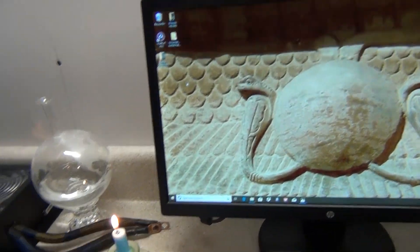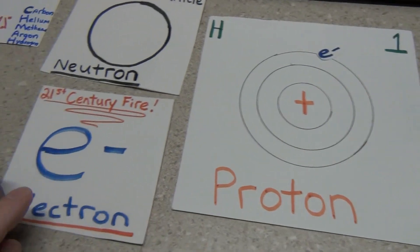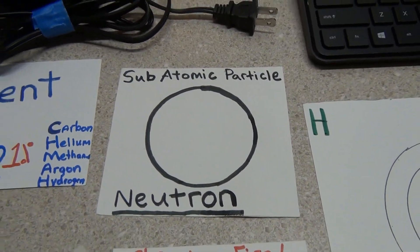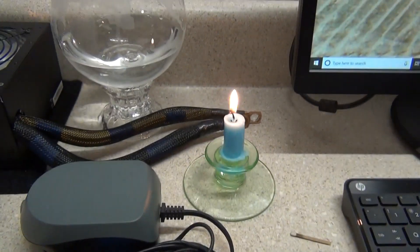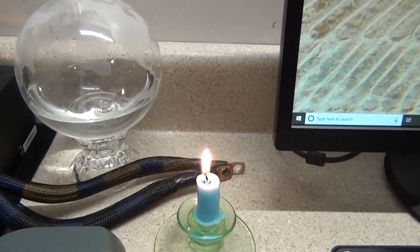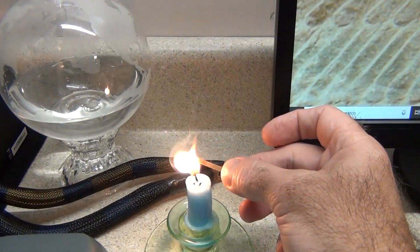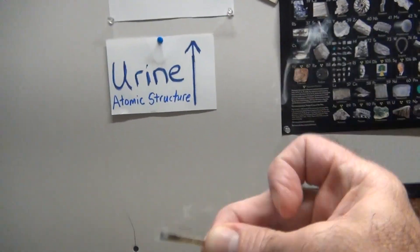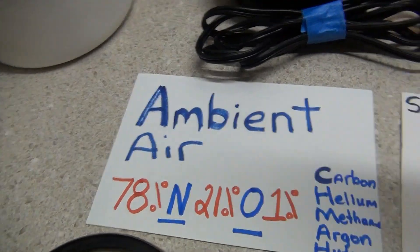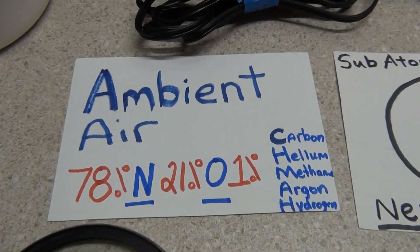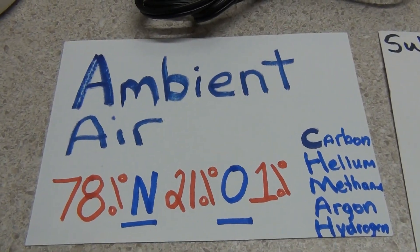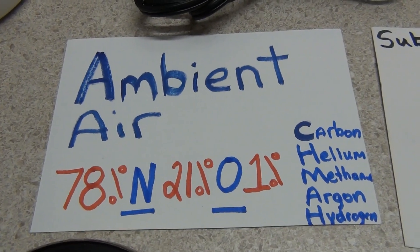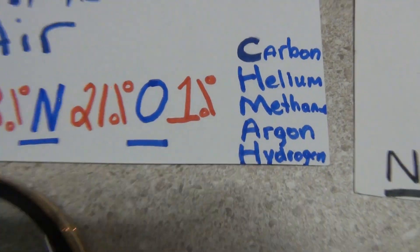So you have the proton, the electron, and the neutron — we're trying to get away from the neutron now. A lot of people ask, and Stanley Myers asked his 12th grade teacher: why, when you light a match, doesn't all the air burn up in the atmosphere? The reason is that ambient air mostly constitutes non-combustible gases — it's 78% nitrogen, 21% oxygen, and 1% carbon, helium, methane, argon, and hydrogen.